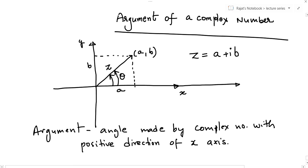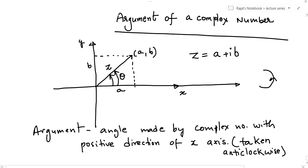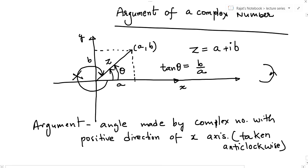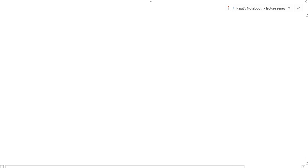Remember that in measuring the angle we always move anti-clockwise. We never rotate clockwise from the positive direction. Let us call this angle theta. Then in this triangle, tan(theta) = b/a, so theta = tan inverse of b/a. The argument is theta = tan inverse(b/a).